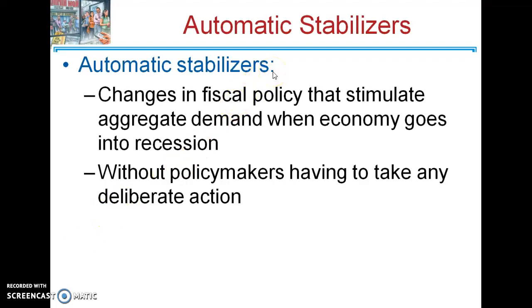Automatic stabilizers in the economy are basically changes in fiscal policy that happen automatically to increase demand when there's a recession. The idea is that policymakers might not have to do anything because things can happen automatically in real time. The nice thing about automatic stabilizers is that there's no lag between policymakers trying to get things through Congress or committees, because they happen automatically when the recession happens.